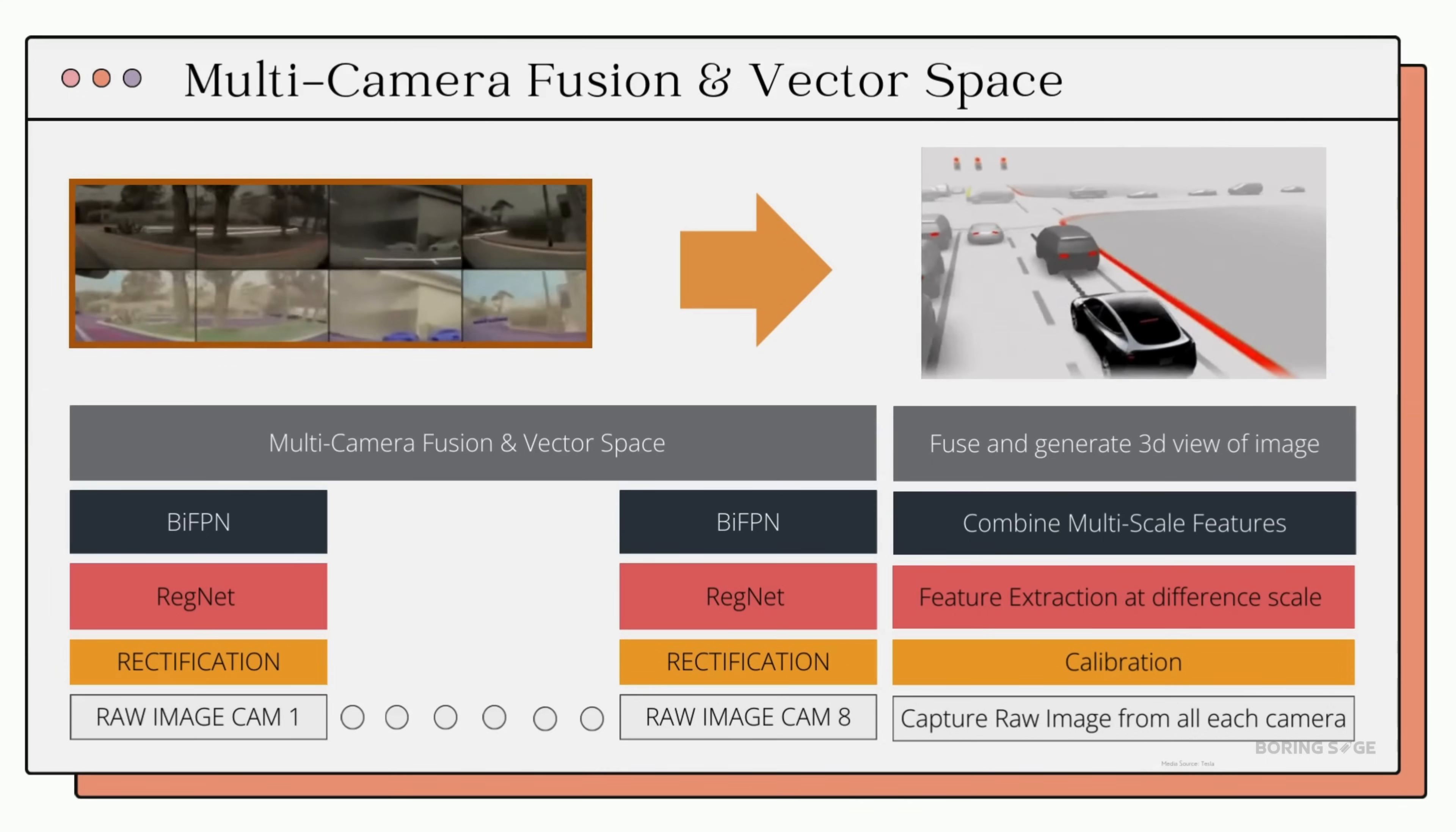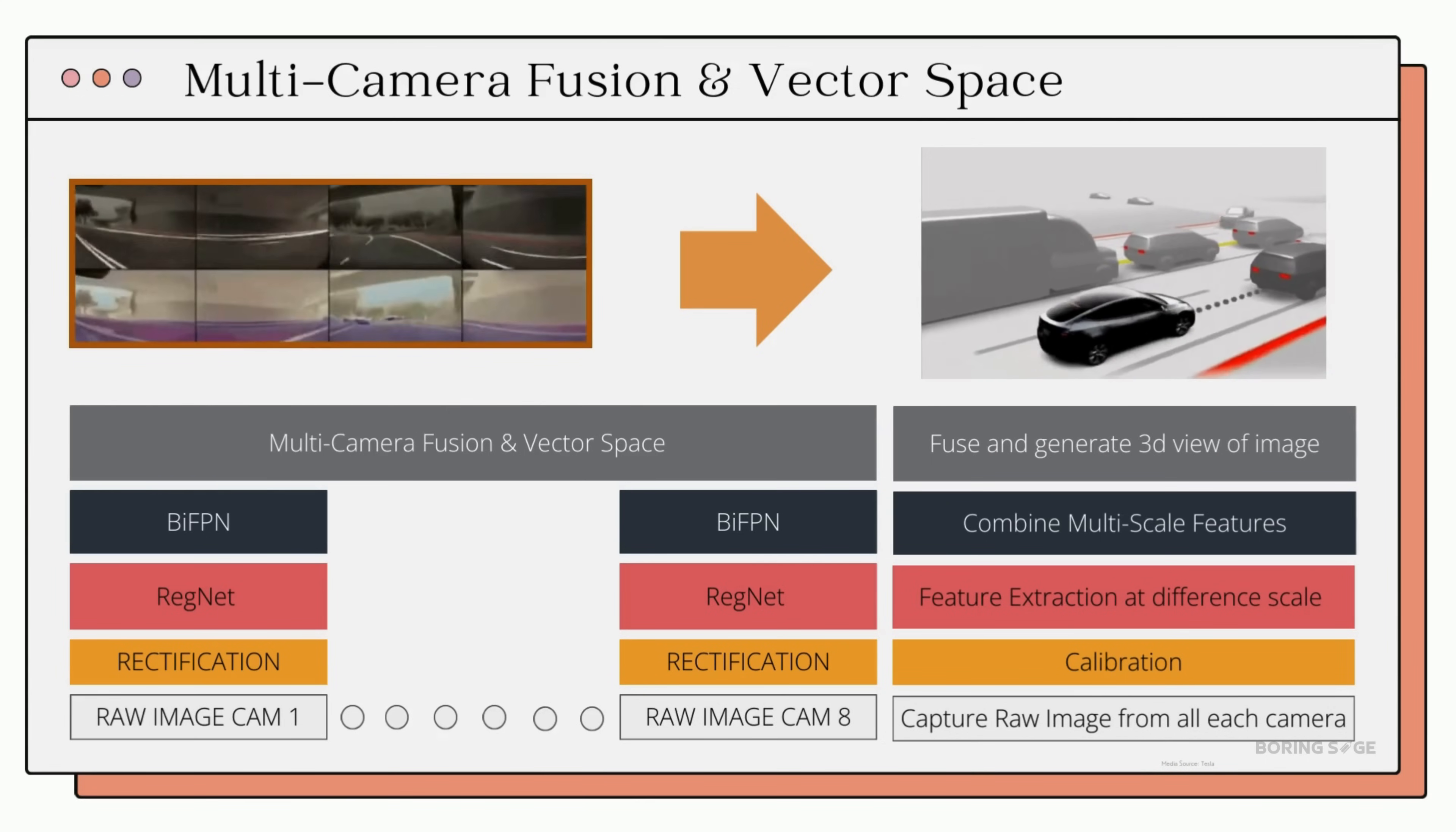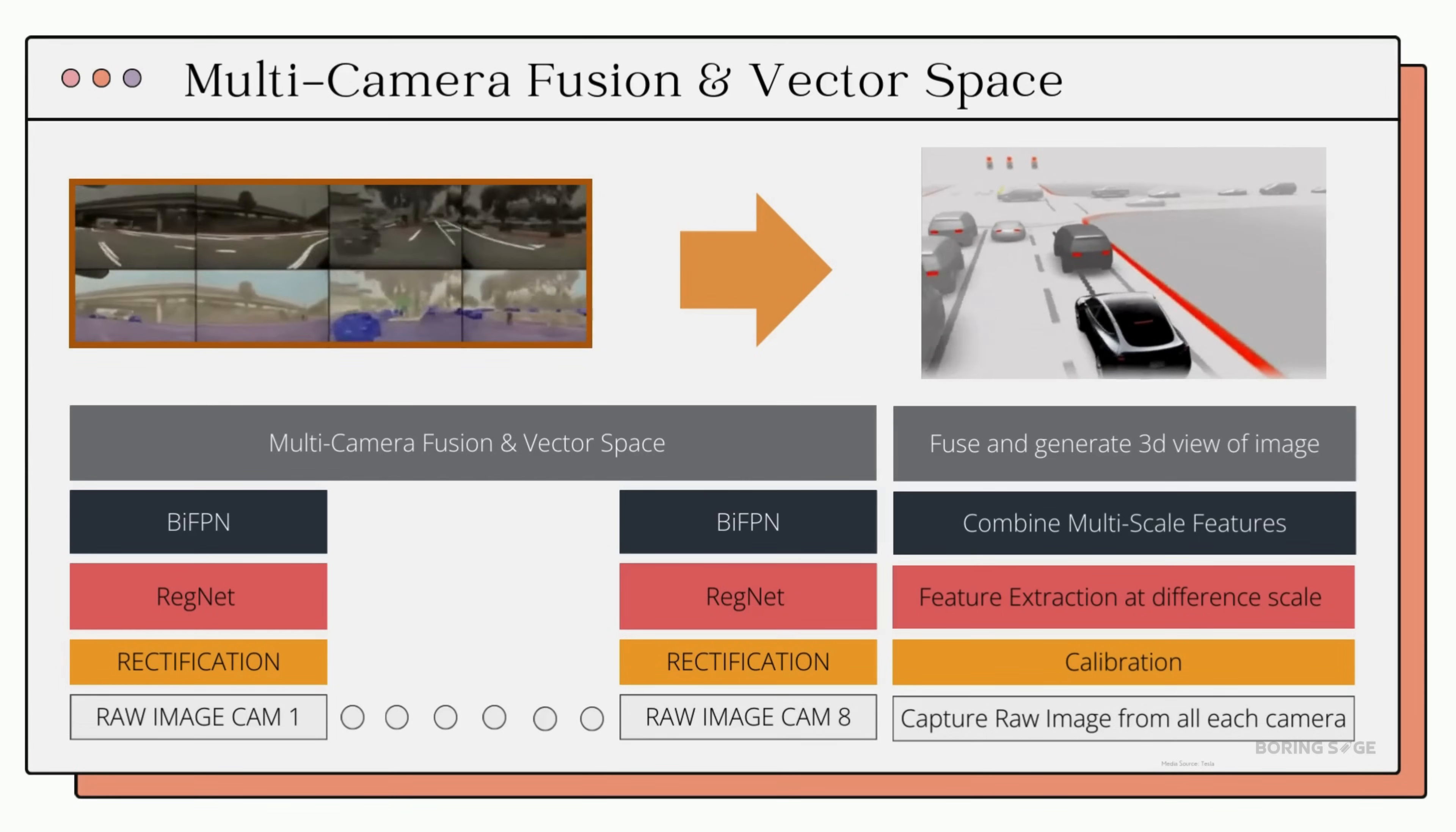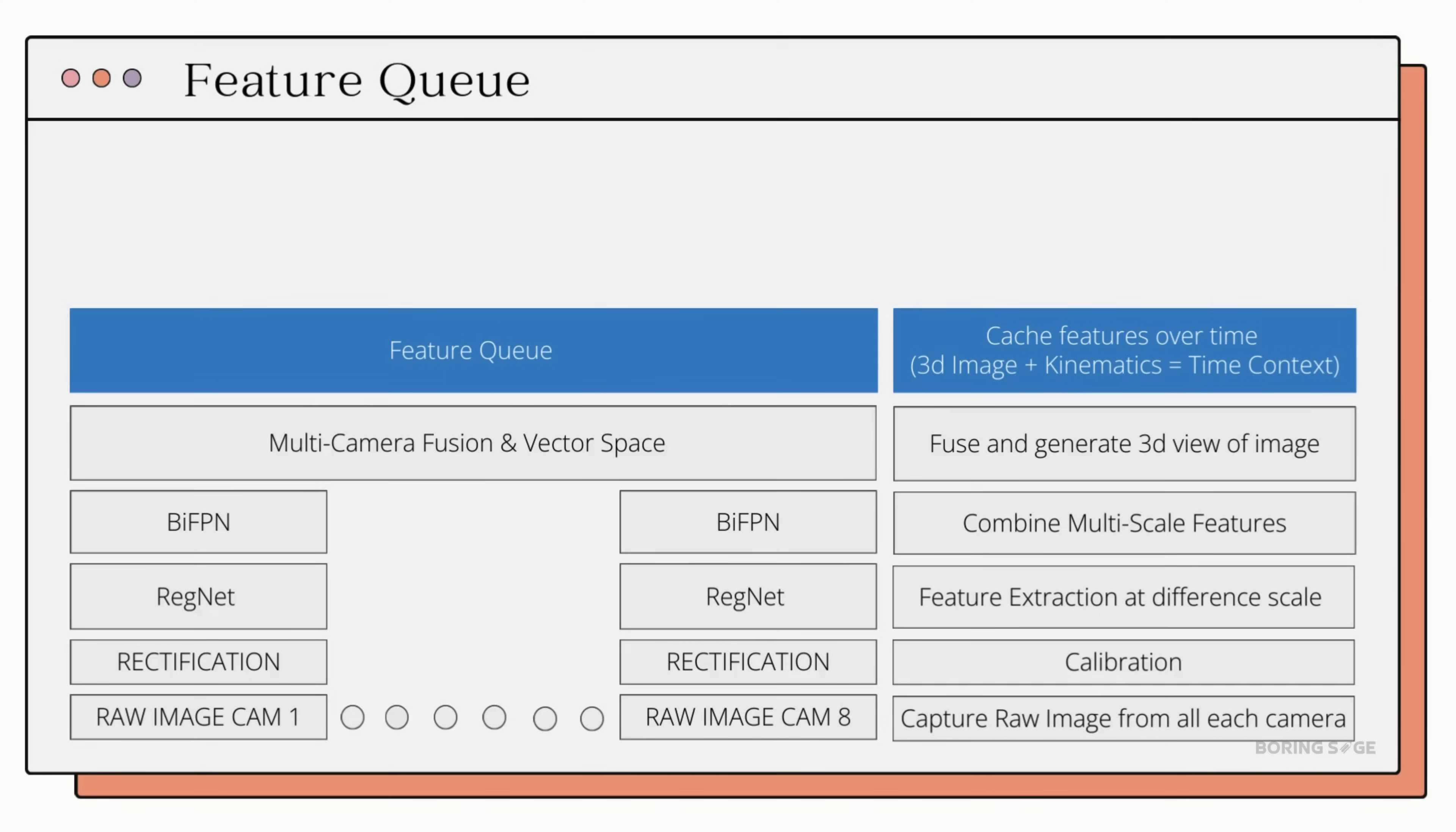Now that Tesla has a solid 3D model of its surroundings, it's still missing a critical component: time. We still don't know how fast the vehicles ahead of us are moving, and the same applies for the pedestrians, isn't it? That's where the Future Queue comes into the picture. The Future Queue adds a time component by caching data over a period, which lets the system understand how the objects are moving. It's not just about knowing where a car or a pedestrian is, but also understanding how fast they are going and in which direction.